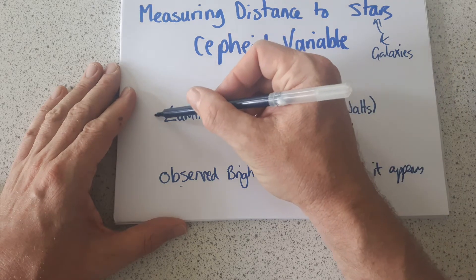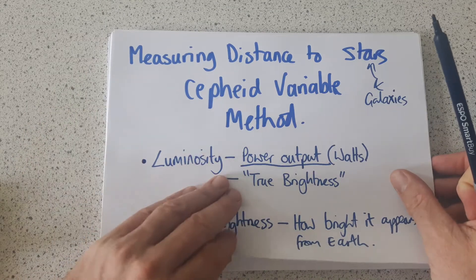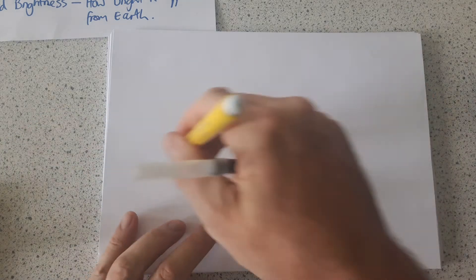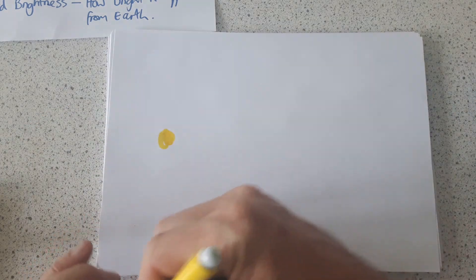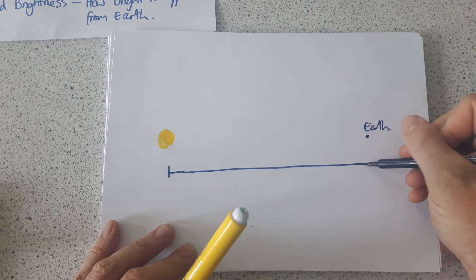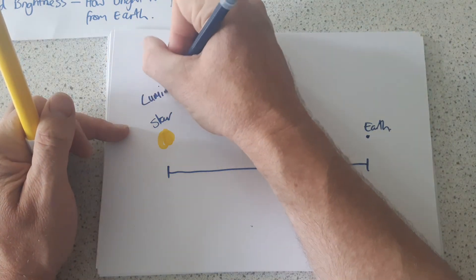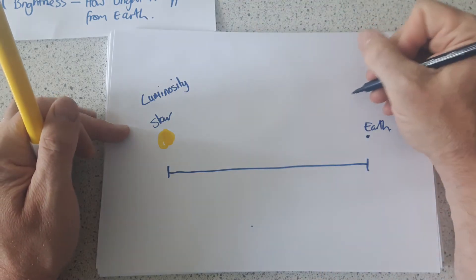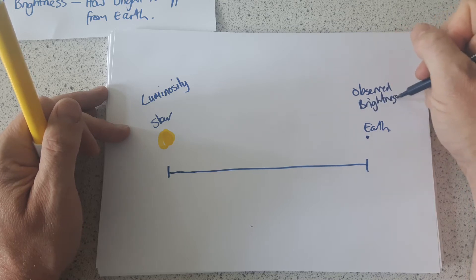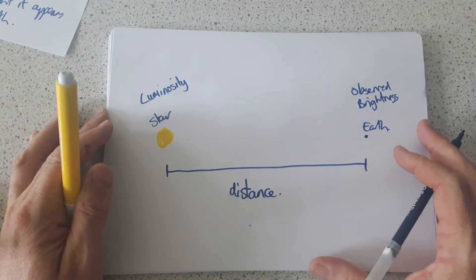So these two ideas — the luminosity or true brightness, and the observed brightness — are a way that we can start to think about the distance that the star is away. If I have a star and I'm observing it from Earth, the star has a luminosity, its true brightness or power output, and it has an observed brightness — how bright it appears from Earth — and then there is the distance that separates the star and Earth.